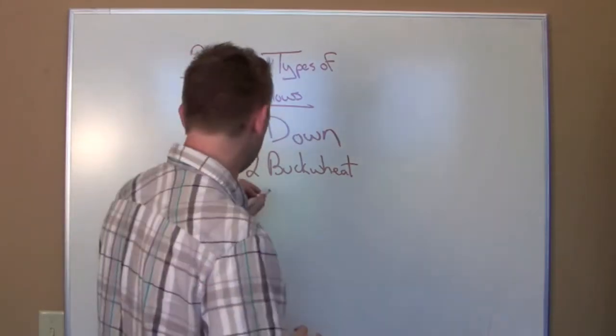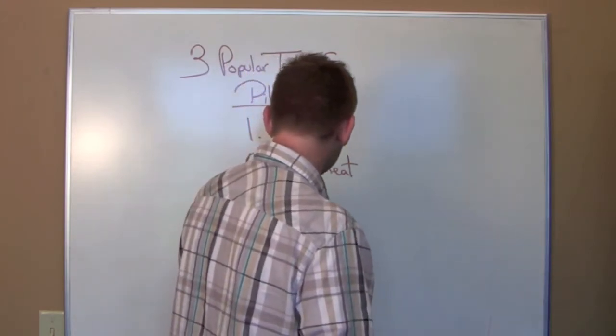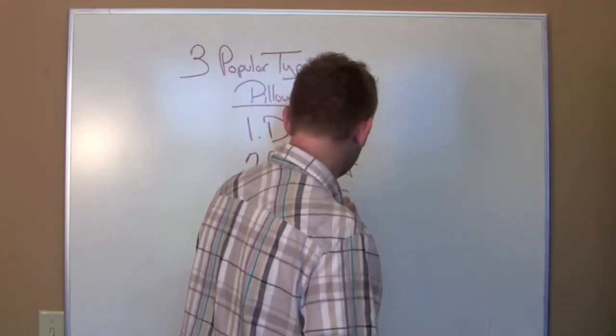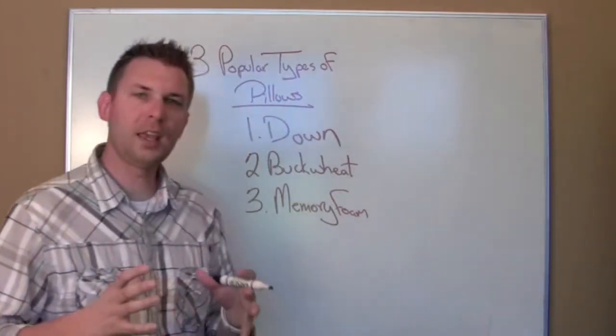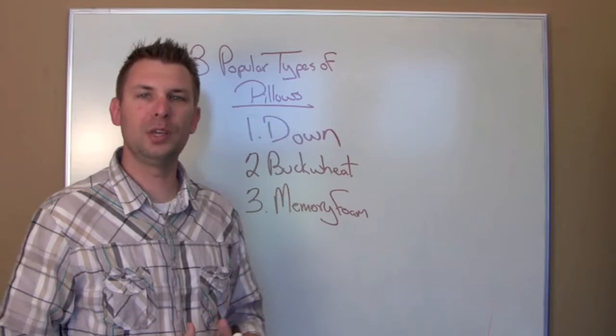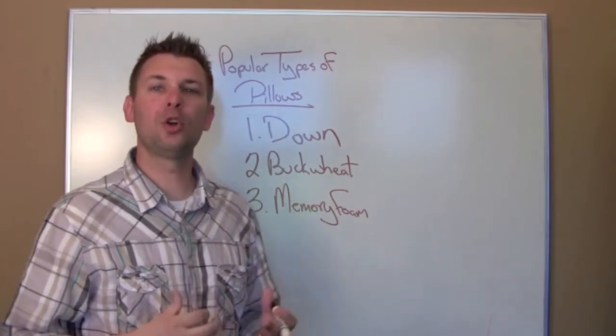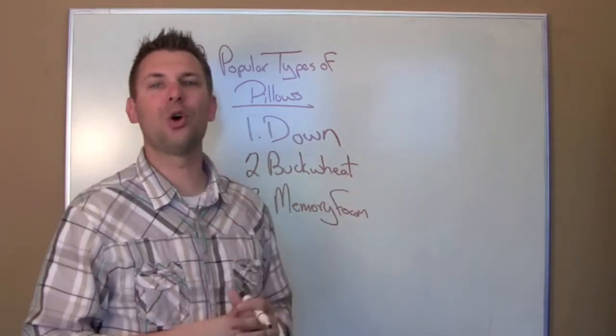Now the third type of pillow that I just mentioned that we're going to go over today is the memory foam pillow, also called a contour pillow. And these pillows were actually developed by NASA to be seats for astronauts as they shot into orbit, trying to give them a little more comfort during their bumpy ride to go out into space.